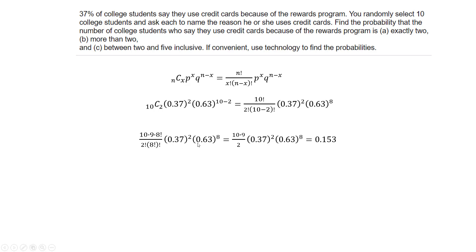The 8 factorials cancel, and you just end up with 10 times 9 over 2, so that's not too bad.